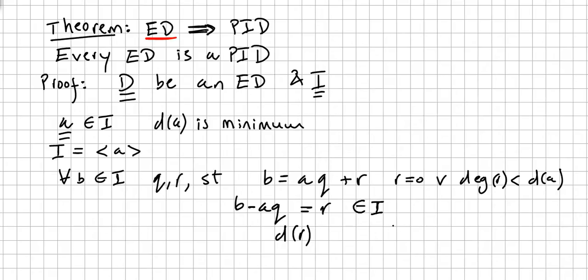So the degree of r cannot be less than the degree of a, right? This cannot happen. And since this cannot happen, only this one can be true: r has to equal zero. So this implies that r should be zero.